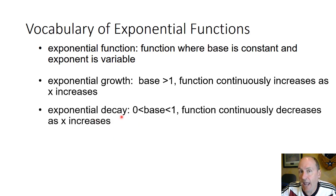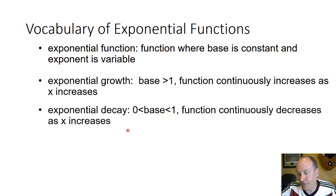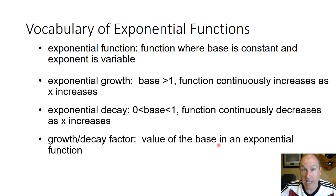Then we have exponential decay functions. Exponential decay functions occur where the base is between 0 and 1, non-inclusive. This is a function where it's going to continuously decrease as x increases. In both cases, whether it's growth or decay, there is a certain factor — the value of the base — called the growth factor or the decay factor in an exponential function.